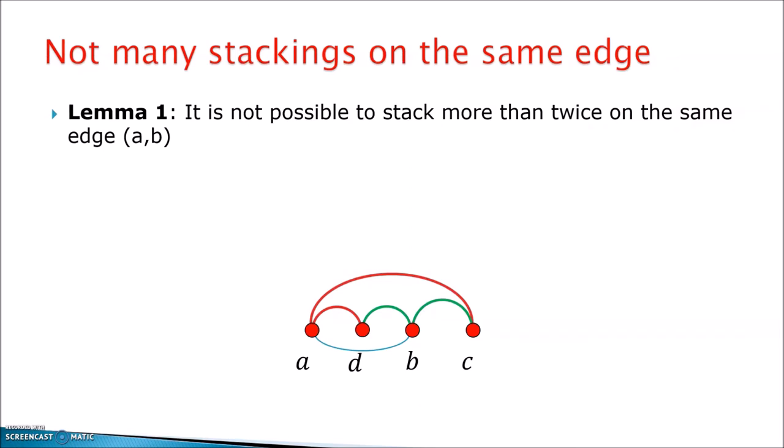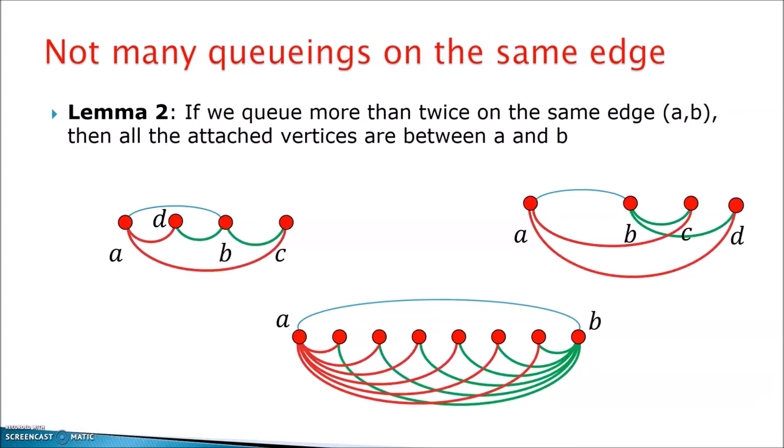And in fact, what we first prove is that the stackings are not useful. So if you have an edge, we know that on each edge, we will have 33 attachments in our construction, at most two of them can be stackings. So at most two of them can be such that both edges go to the stack. And basically, you see here that as soon as I have two stackings, this is basically the only drawing I can do up to some symmetry. So as soon as I do a third stacking, I will get some crossing in here.